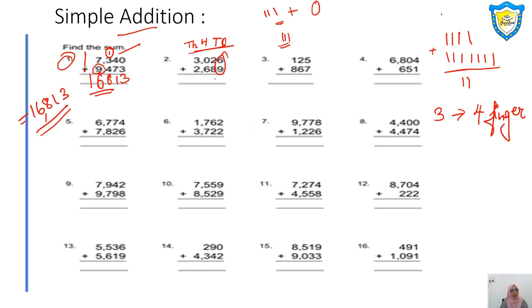Next: 6 plus 9 — 6, 7, 8, 9, 10, 11, 12, 13, 14, 15. So 15 means 5 will be down and 1 will be carried above. Then 2 plus 8: 2, 3, 4, 5, 6, 7, 8, 9, 10, plus the carried 1 is 11 — so 1 down carry 1. Then 6 plus 0 is 6, plus carried 1 is 7. And 3 plus 2 is 5. So you will write 5, 7, 1, 5 — the total answer is 5715.